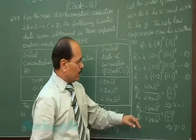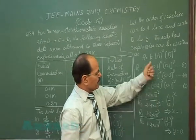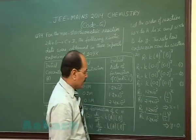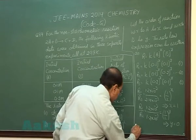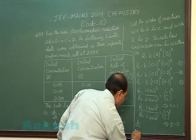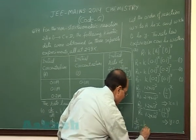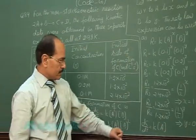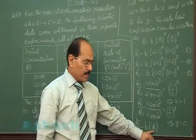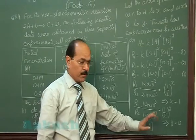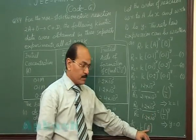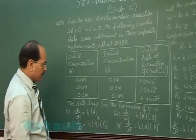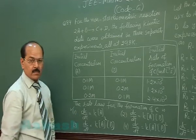It means the order of reaction is 1 with respect to A and 0 with respect to B. Of the 4 options given, option 1 is the correct answer.